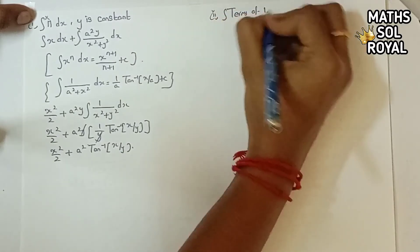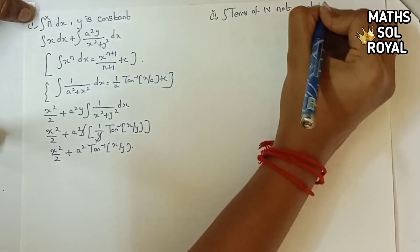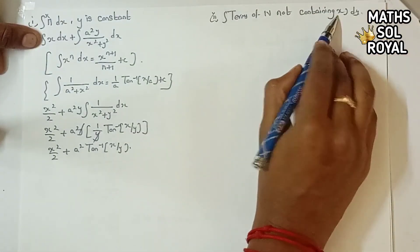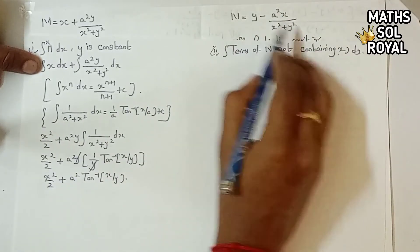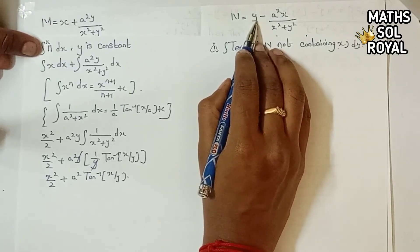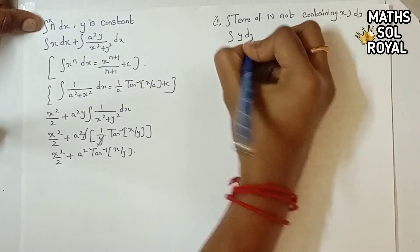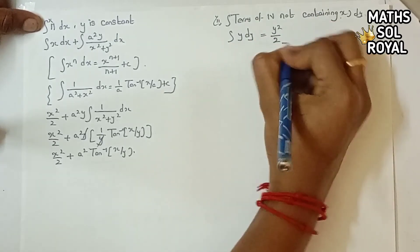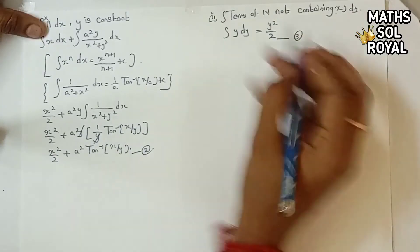The next step is to find terms of N not containing x. In N, we check: there is an x term present, but we only take the term with no x, which is y. So we integrate: ∫y dy = y²/2. This is equation 3.